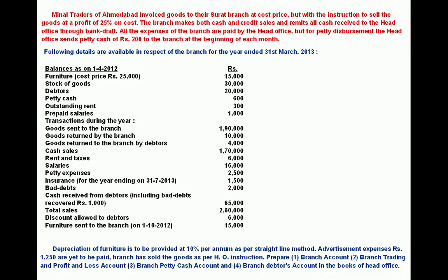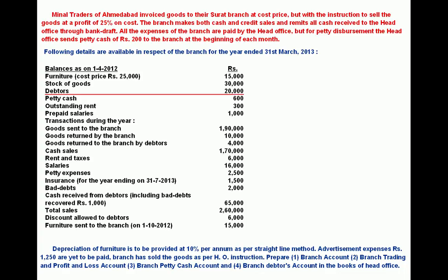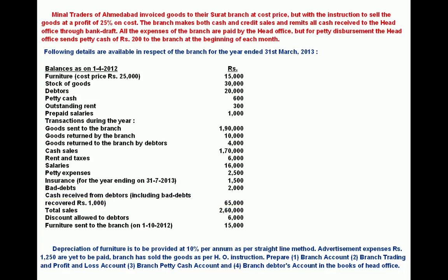Goods are not sent to the branch at invoice price but at cost price, with instruction to sell at cost plus 25%. In this type of situation, any missing stock details are found by preparing a stock account or alternatively a trading account. From total sales deduct cash sales to get credit sales. Opening balance of debtors and credit sales are known; cash received from debtors is 64000, so closing balance of debtors is missing and must be found by preparing a debtors account.